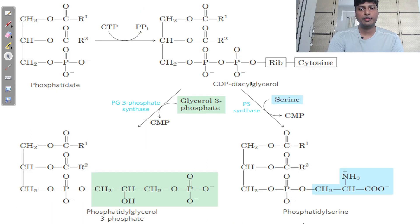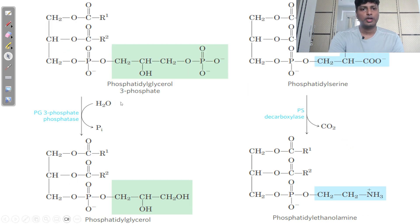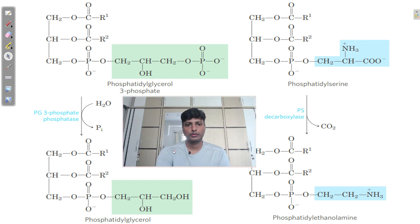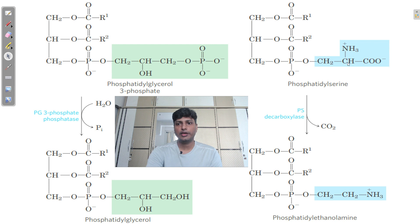In bacteria, once CDP-diacylglycerol is formed, there can be addition of glycerol-3-phosphate: one CMP is removed and the net structure is phosphatidylglycerol-3-phosphate. On the other side, if the amino acid serine is added, again one CMP is removed and the resulting structure is phosphatidylserine. From phosphatidylglycerol-3-phosphate, removal of the phosphate gives phosphatidylglycerol; from phosphatidylserine, removal of CO2 gives phosphatidylethanolamine.